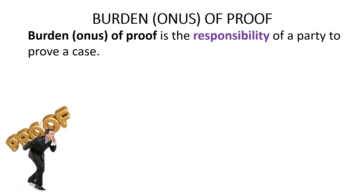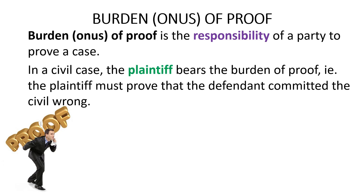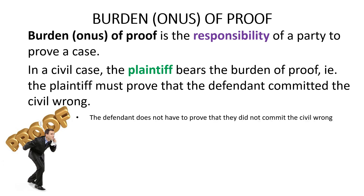The third key concept in the Victorian civil justice system is the burden of proof. The burden of proof, also known as the onus of proof, is the responsibility of a party to prove a case. In a civil case, it is the plaintiff who bears the burden of proof — that is, it is the plaintiff who must prove that the defendant committed the civil wrong. The defendant does not have to prove that they did not commit the civil wrong.